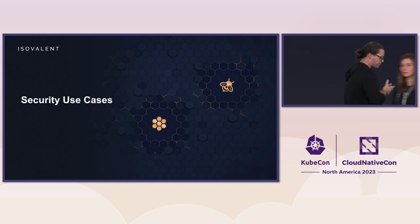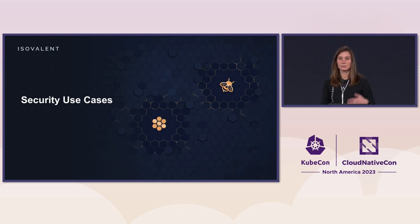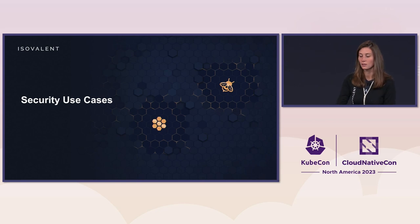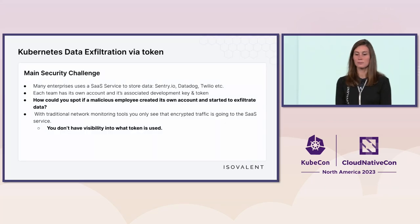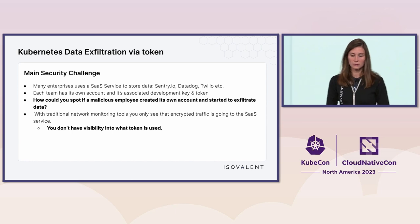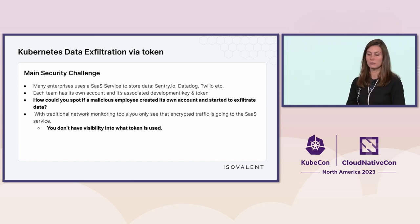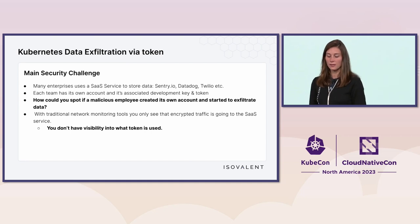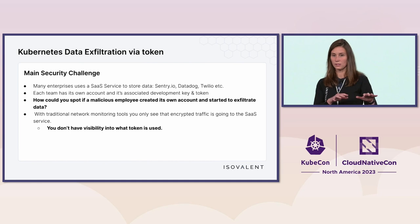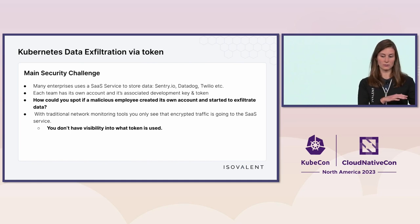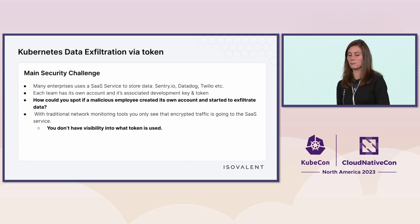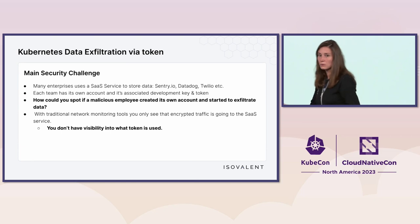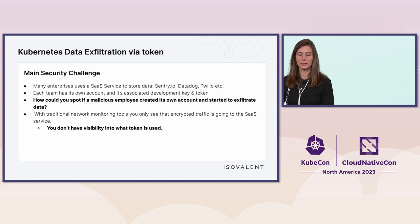Now that we've got the L7 visibility back via KTLS, what would be the end-case use cases? How would an information security or SecOps team use this? The first example is data exfiltration via token. Many enterprises use a SaaS service to store data — like Datadog, Twilio, or Sentry — and each team has its own account and an associated token. How could you spot a malicious employee who creates their own account and token, then starts shipping data to that account? With traditional network monitoring tools, you only see that there's encrypted traffic going to that SaaS service — you don't have visibility into what token is used.